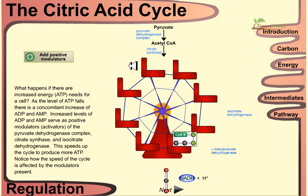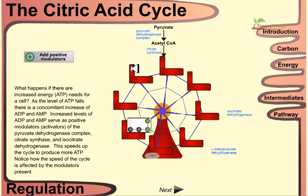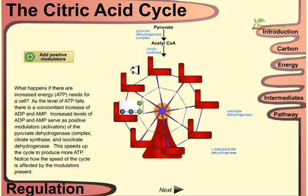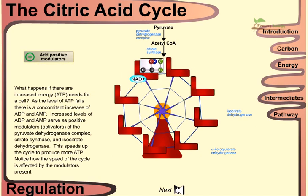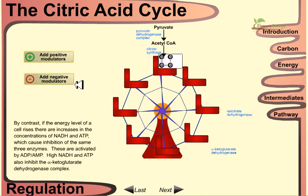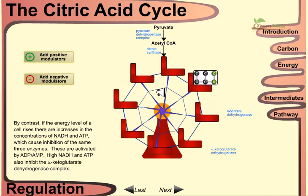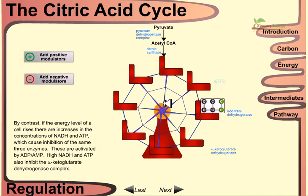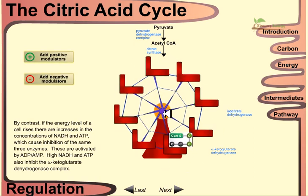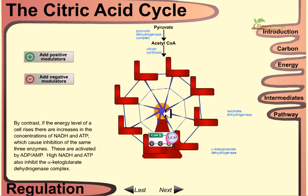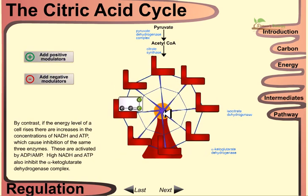If negative modulators like ATP, acetyl-CoA, or citrate are added, the cell does not need to produce more ATP, so the reaction slows down further. By contrast, if the energy level of a cell rises, there are increases in the concentration of NADH and ATP, which causes inhibition of the same three enzymes. High NADH and ATP also inhibit the alpha-ketoglutarate dehydrogenase complex.